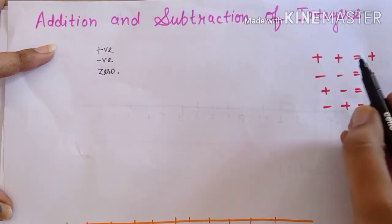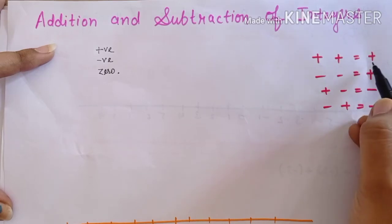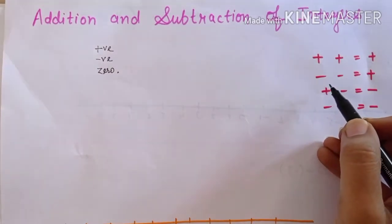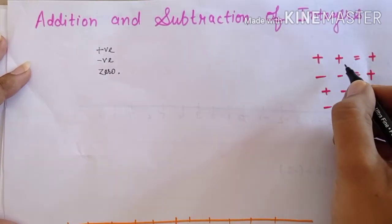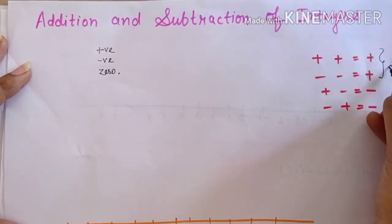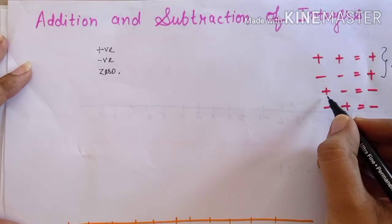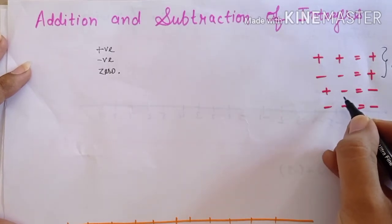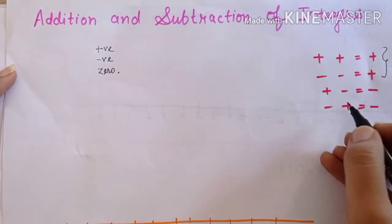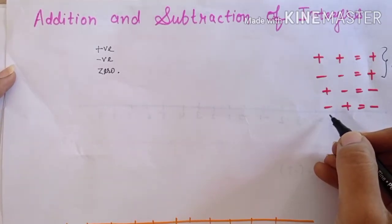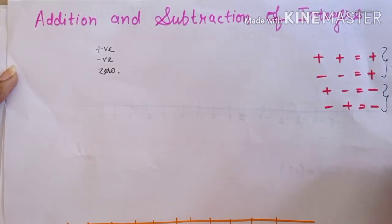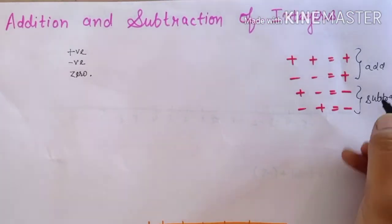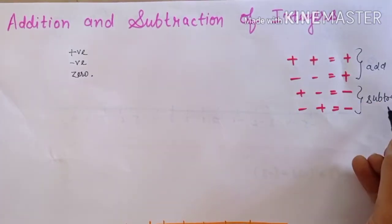अगर हम दो positive numbers को add करते हैं तो answer भी plus में आता है। अगर हम दो minus numbers को add करते हैं तो answer minus में आता है। Means अगर same sign है — plus-plus या minus-minus — तो हम add करेंगे। अगर different sign है — एक plus, एक minus — तो हम subtract करेंगे। Same sign में add करना है, different sign में subtract करना है।